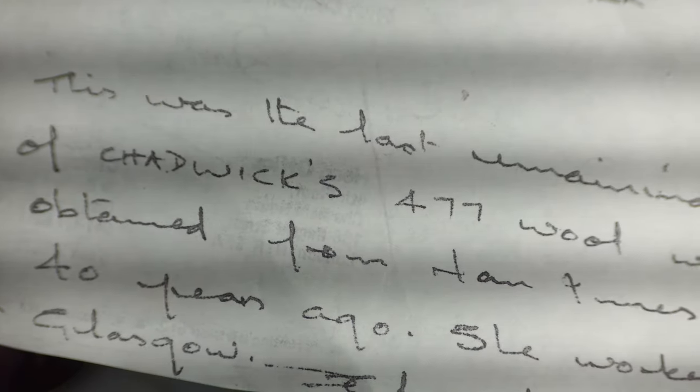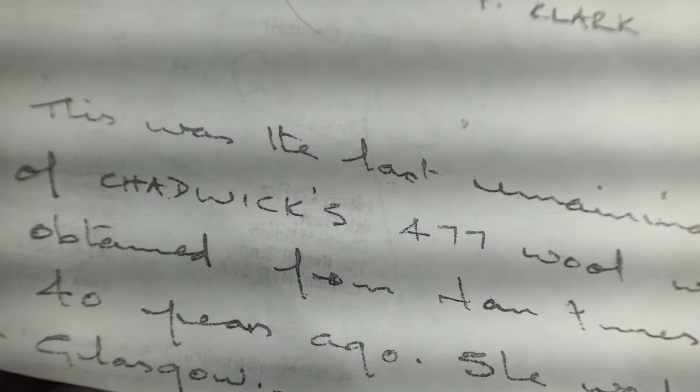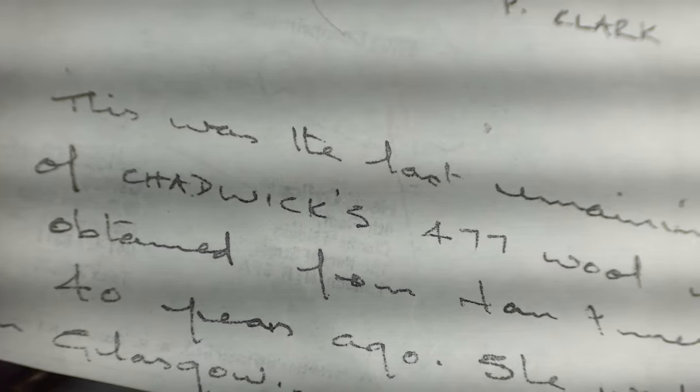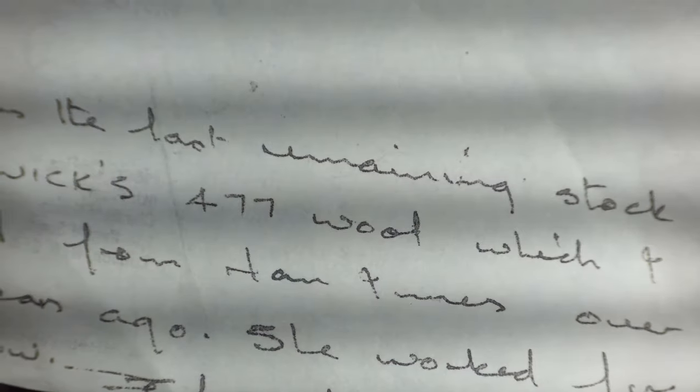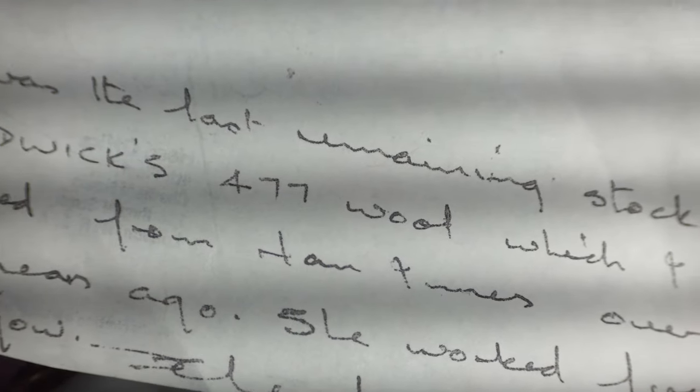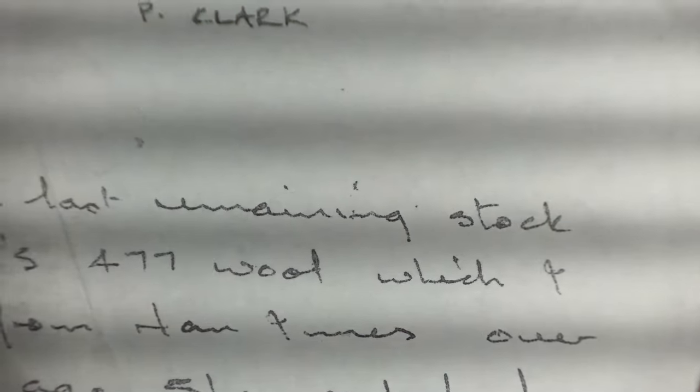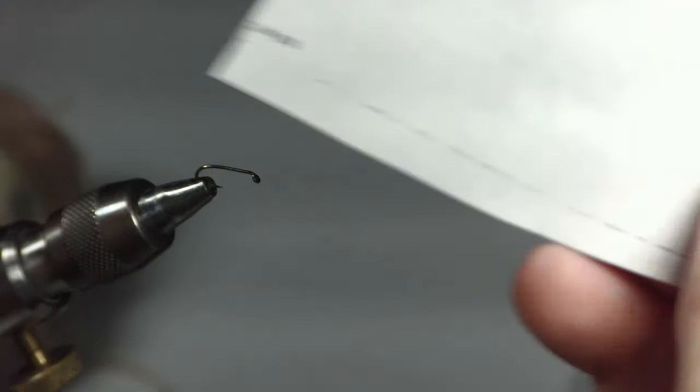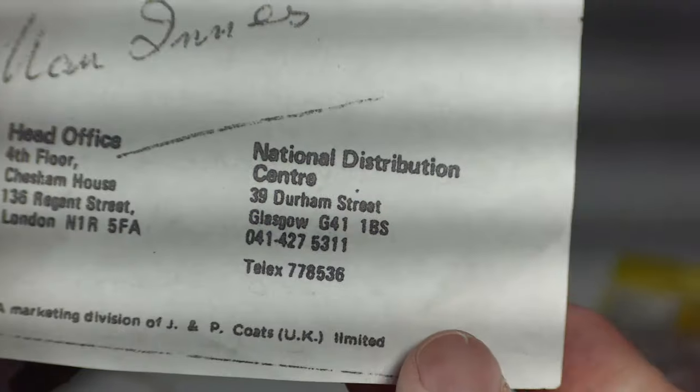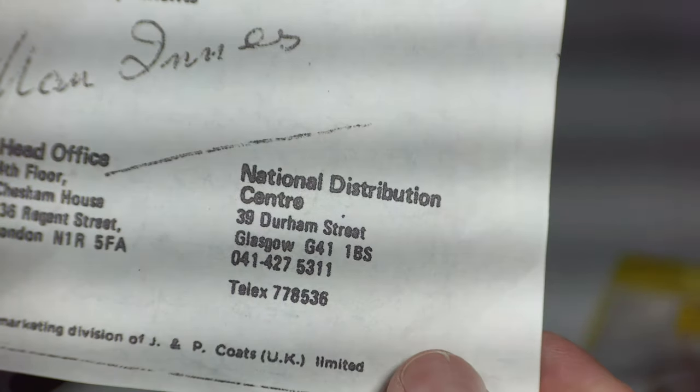There's a little card that it came on and finally found a guy in Europe, the UK, that claimed to have some, and so he sent me probably two yards of it along with the story that this came from some of the last Chadwick's 477 about 40 years ago that was sold at a store called Coates, kind of a department store, haberdashery sort of store, in Glasgow.